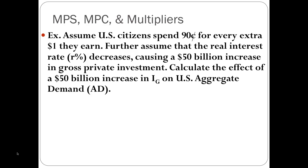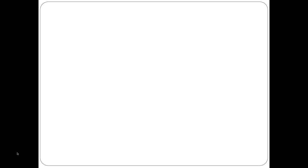Let's apply those steps to this question. The first thing is to look at what the MPS or MPC is. We can see that U.S. citizens spend $0.90 of every dollar they earn, so our MPC is 0.9. If your MPC is 0.9, then your MPS is 0.1, because 0.9 plus 0.1 equals 1. That's the first step — figure out your MPC and MPS.